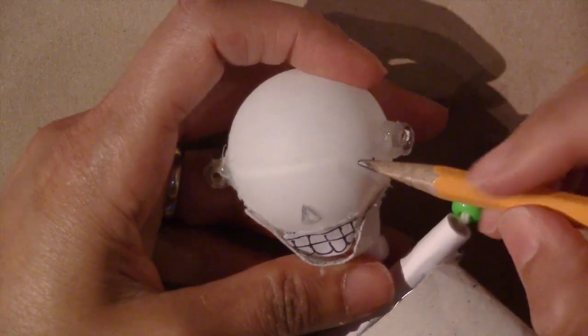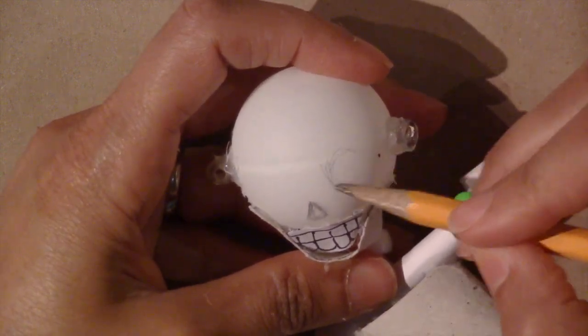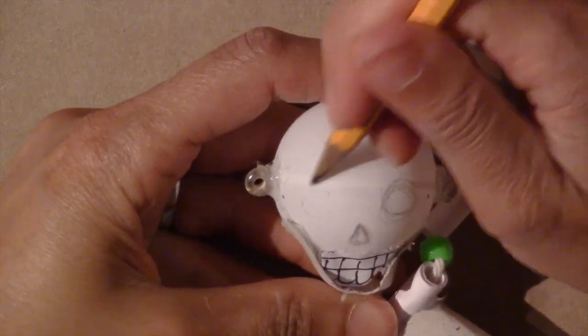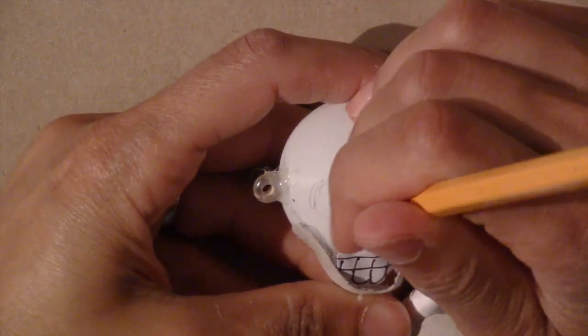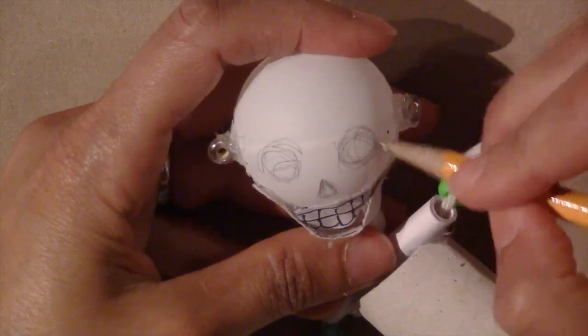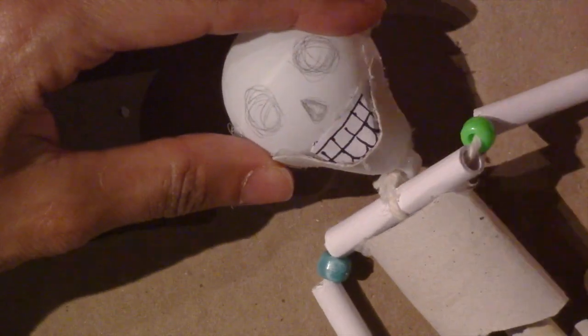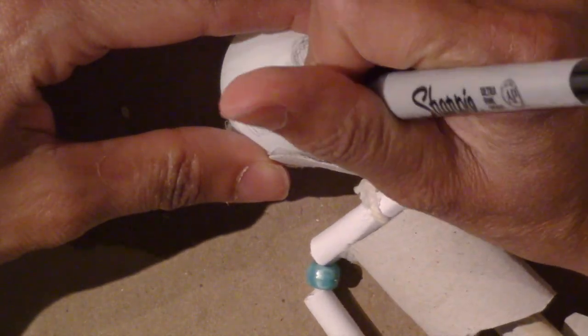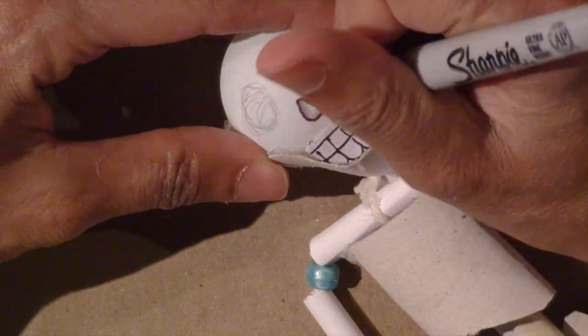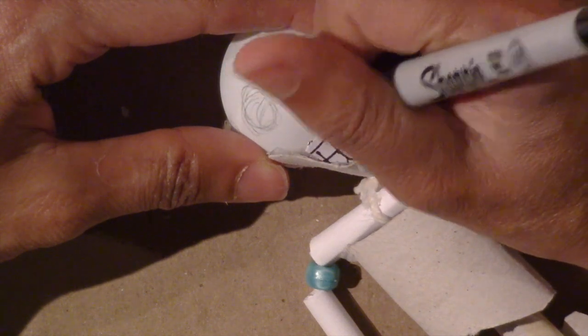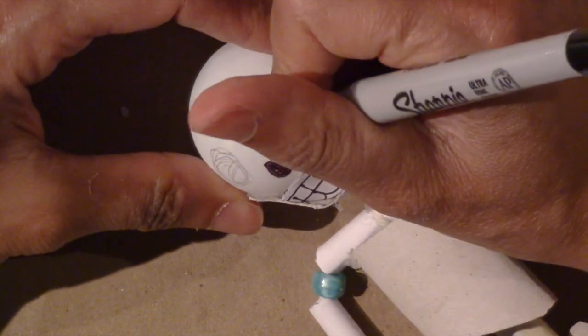For the eye and nose cavities, start by sketching them on with pencil. The lines can easily be erased if needed. Then fill in the areas using permanent black marker. You could also use acrylic paint here.